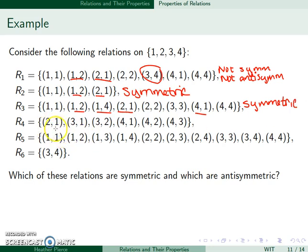My next one, I have 2,1 but not 1,2. 3,1 but not 1,3. 3,2 but not 2,3. 4,1 but not 1,4. 4,2 but not 2,4. And then 4,3 but not 3,4. So this one is antisymmetric because it doesn't flip any of them.